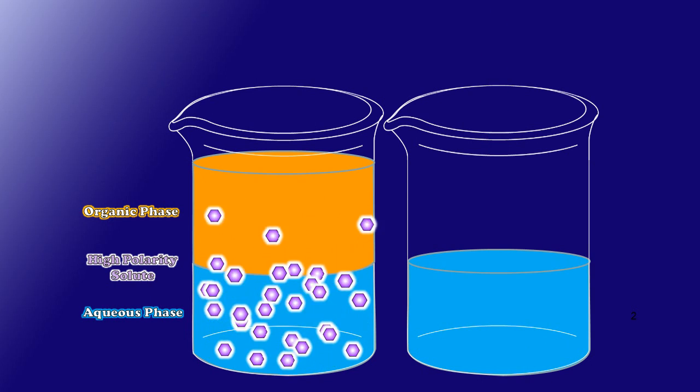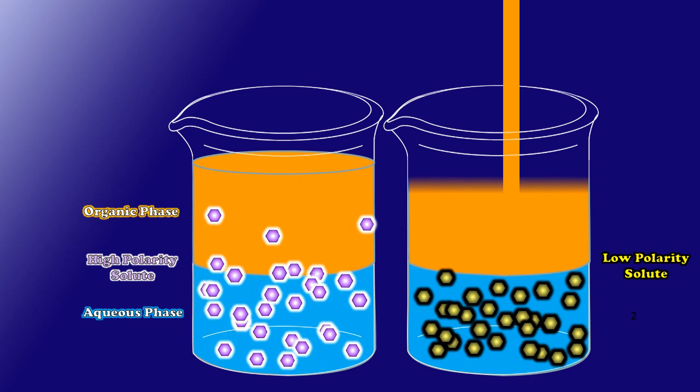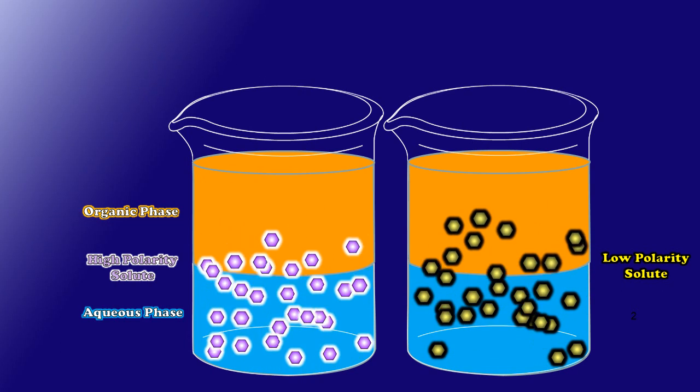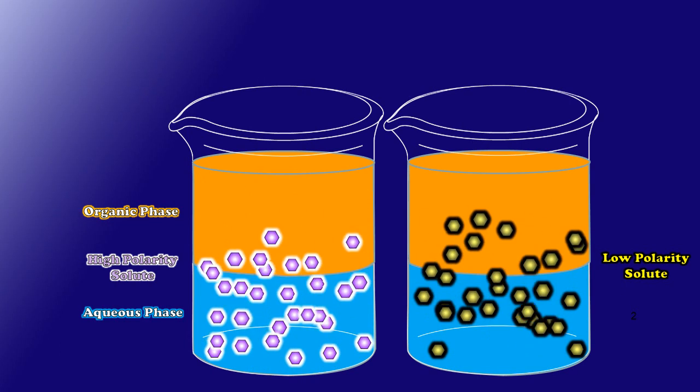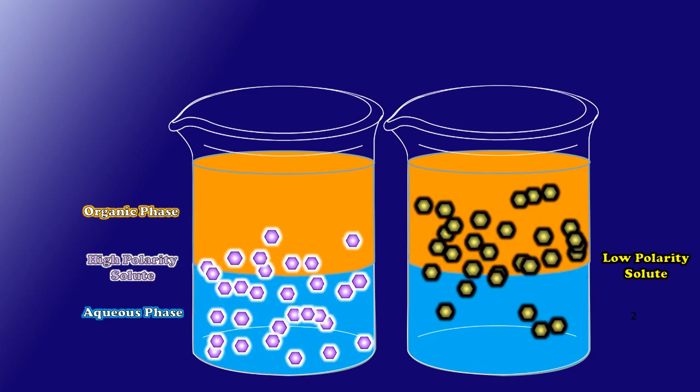Now let's take a look at what happens when instead I add an aqueous layer to my second beaker and then dissolve in that a lower polarity solute. Then to that mixture I'm going to add some organic solvent as well and I'm going to allow an equilibrium to establish itself. But my lower polarity solute has a higher affinity for the organic phase than for the aqueous phase, so it tends to spend more time there.